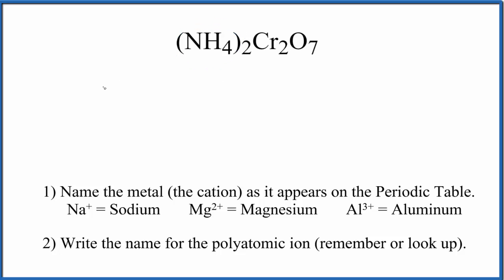But here, since we have this NH4, we're just going to write ammonium, since this is the ammonium ion, and then Cr2O7, that's the dichromate ion.